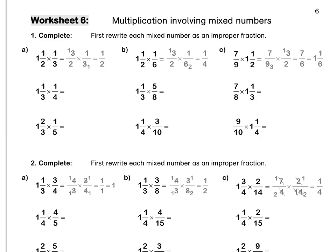Press pause to complete question A. Question B: we rewrite 1 and a half as 3 over 2 times one sixth. Then we simplify in our question — we divide by 3, divide by 3 — and we multiply out to get a quarter.